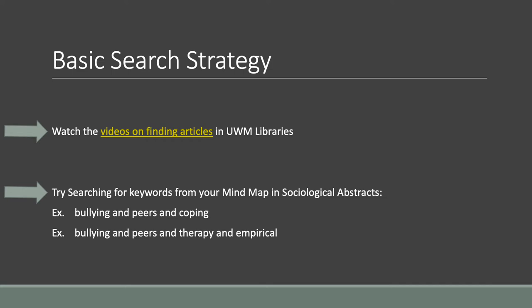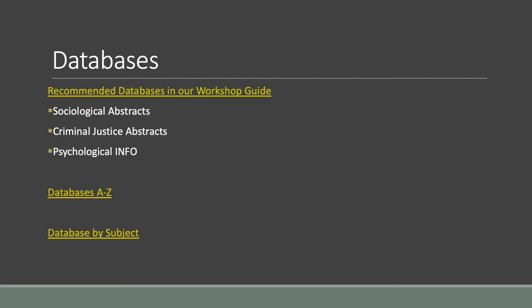Remember that you'll be looking for empirical studies, so another approach is to look for the keyword 'empirical' in your search to help you identify those studies. I'm recommending a set of three databases as the primary place to search: Sociological Abstracts, Criminal Justice Abstracts, and Psych Info. I'm recommending these databases because this is where you will find empirical studies or applied research in peer-reviewed journals in the social science disciplines.